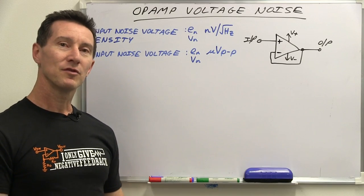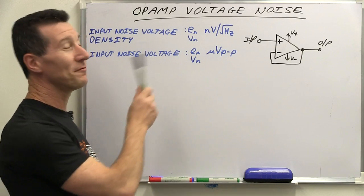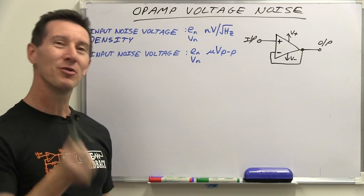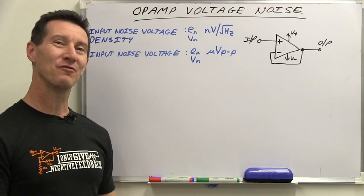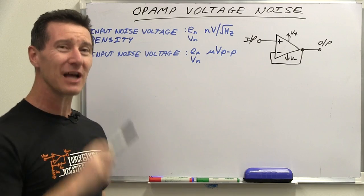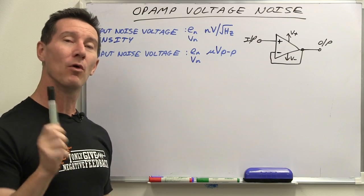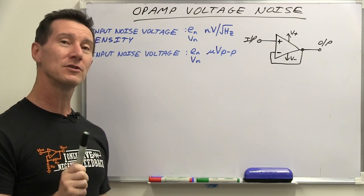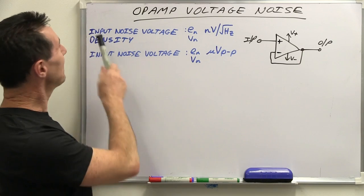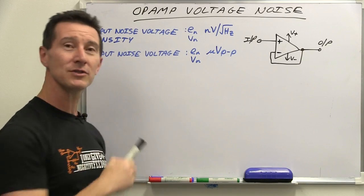Hi, welcome to Fundamentals Friday. Today we're going to take a look at op-amp voltage noise. This can be a real big can of worms, so I'm going to only open it just a little bit today. We're going to take a look at one of the more confusing parameters on an op-amp data sheet, and that's input noise voltage density and input noise voltage.